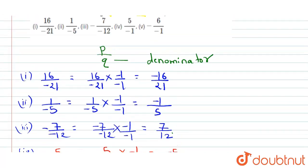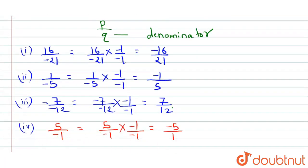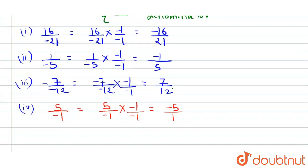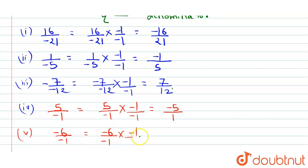The 5th number is minus 6 upon minus 1. We can write it as minus 6 upon minus 1 multiplied by minus 1 upon minus 1, and we get 6 upon 1. So among all the options given to us, we have converted the denominator into a positive number. Thank you.